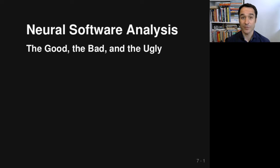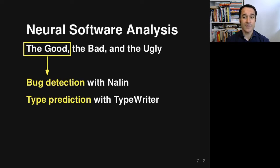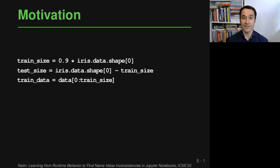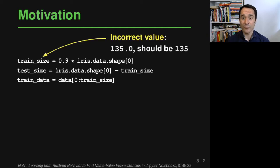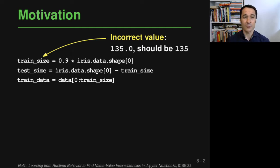In this talk I want to look at this field from three perspectives: the good, the bad, and the ugly. I'll start with the good, showing two examples of successful neural software analyses addressing a bug detection problem and a type prediction problem. Let's start with a concrete piece of Python code taken from a machine learning code base. If you look at it for a while, you might figure out that something is wrong. The first line computes a value supposed to be the size of a training dataset, but this results in a floating point value instead of an integer.